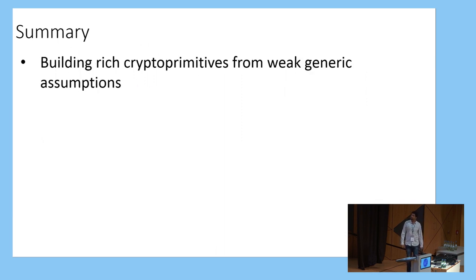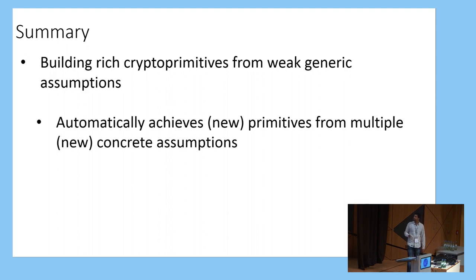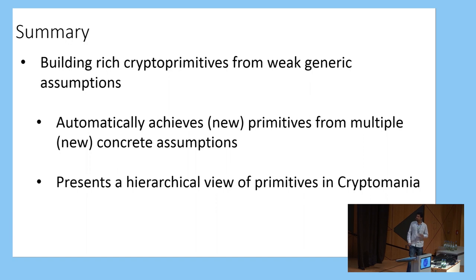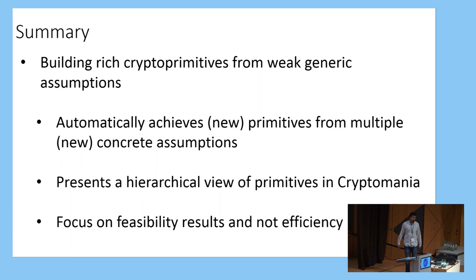To summarize, we show that you can build many rich cryptographic primitives starting from very weak generic assumptions — namely MiniCrypt primitives with algebraic structure. The advantages are twofold: you can automatically achieve new crypto primitives from a large number of concrete assumptions including new ones, without building explicitly from each; and it presents a hierarchical view of cryptomania primitives in terms of the structure inherent in achieving them. If you want efficient constructions this may not be the best approach, but for testing feasibility it is a reasonable and economical approach to building crypto primitives from assumptions.